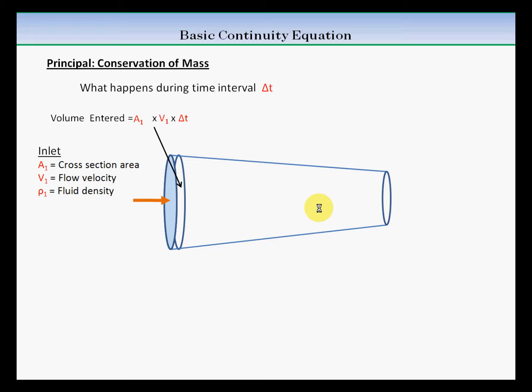And if this is the volume entered, then the mass entered will be the fluid density times the volume. We get mass entered, which is rho times a times v times the time interval.